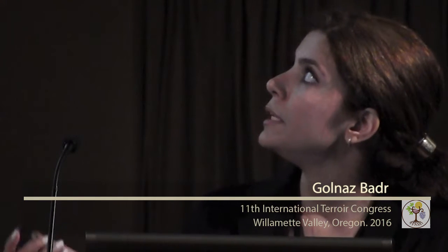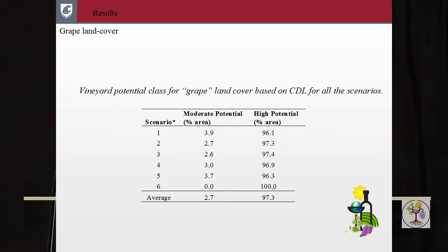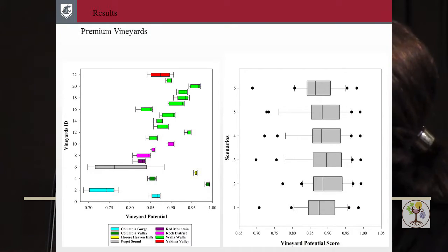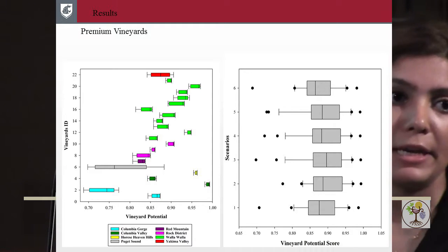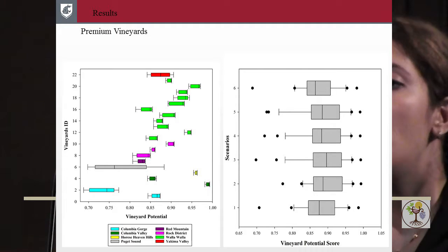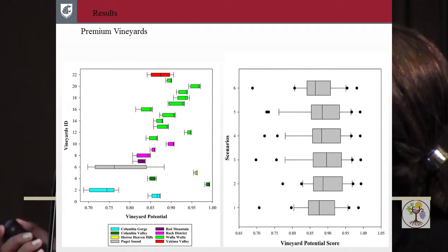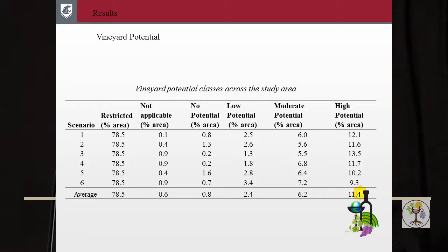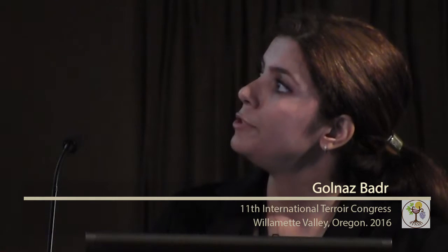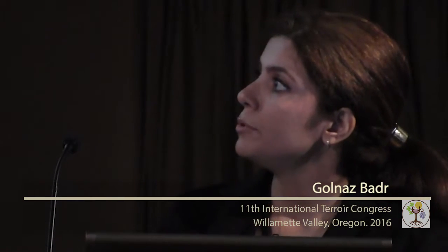Overall, for the vineyards located in the state of Washington, 97% of them were located in high potential regions — scores higher than 0.8 to 1. For the premium vineyards, they were scattered all across different AVAs, and all of them had a vineyard potential score higher than 0.7. On average, between different scenarios, 11.4% of the study area was within the high potential region, and the restricted area — either limited in land cover or lacking water rights — composed most of the study area.